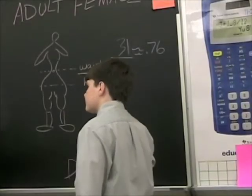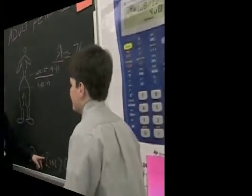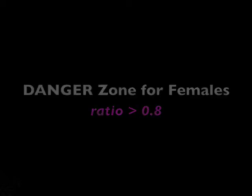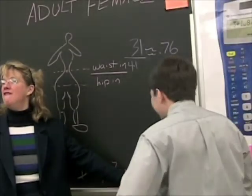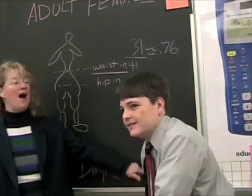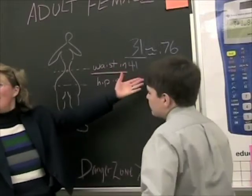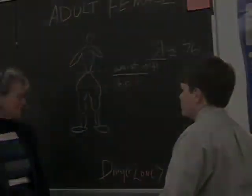Now look — I have to be above eight tenths to be in danger. I am at 0.76, so I am not in the danger zone.